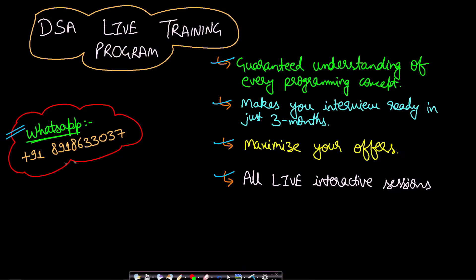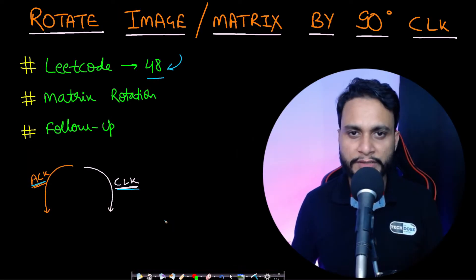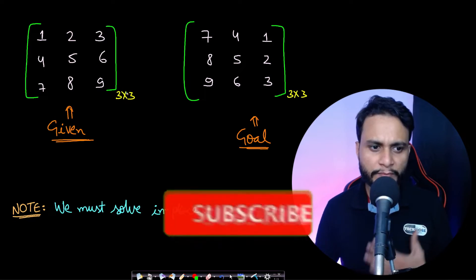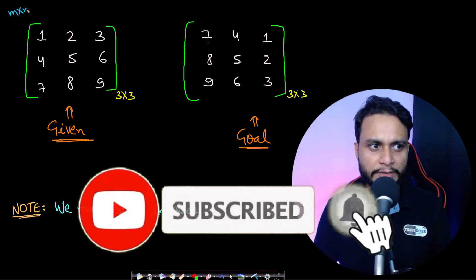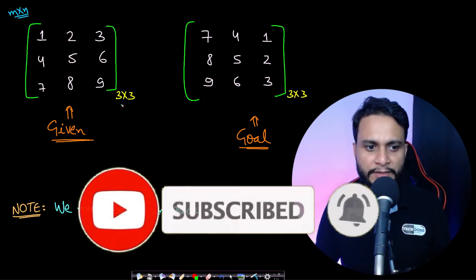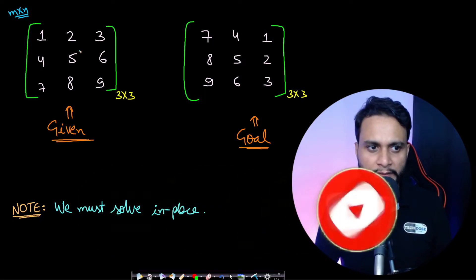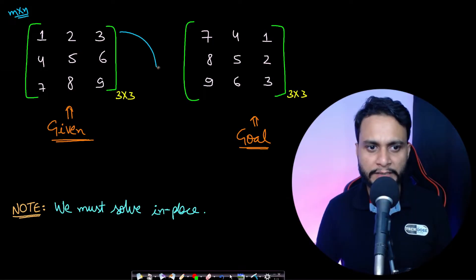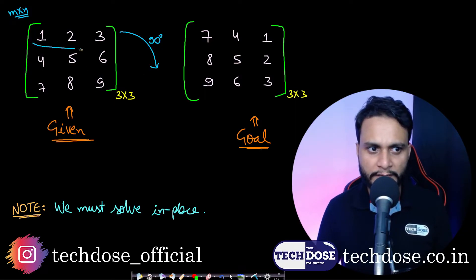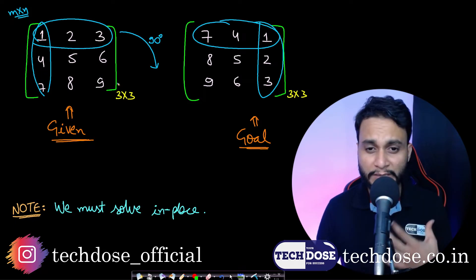In order to get more details please WhatsApp us on this given number. Let us now look at the problem statement. In this problem we are given an M by N matrix. The first example which I have taken is a square matrix. In this case, if I rotate it by 90 degrees in the clockwise direction, then you will see that this first row will become the last column.